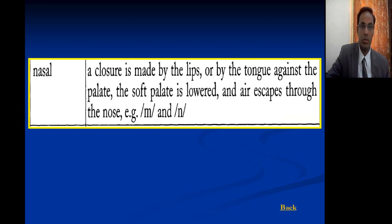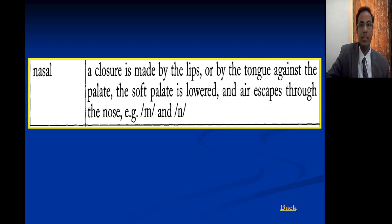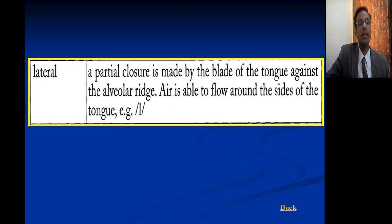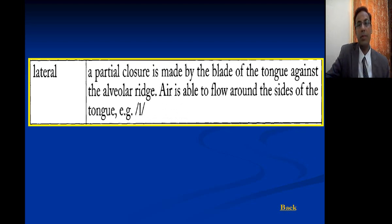Nasal sound: a closure is made by the lips or by the tongue against the palate, the soft palate is lowered, and air escapes through the nose — for example the M and N sounds. Lateral: a partial closure is made by the blade of the tongue against the alveolar ridge; air is able to flow around the sides of the tongue, such as the L sound.